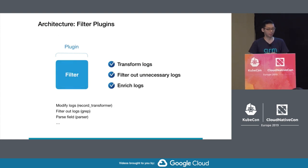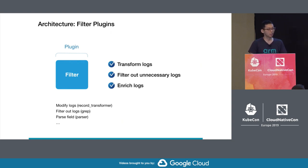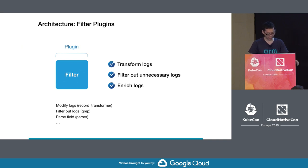The filter plugin is for filtering or mutating logs. For example, if you want to add a hostname to event records, you can use the record_transformer plugin. If you want to check conditions to ignore unnecessary logs — such as filtering by log level — you can use the grep filter. Filters can also be chained, so you can apply multiple filters to the same data stream, such as adding record_transformer and grep filter together.